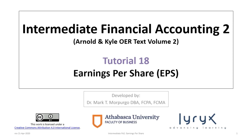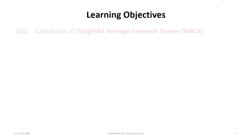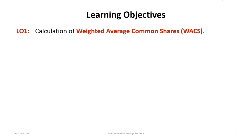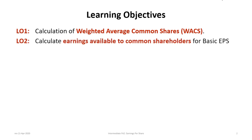Welcome to Intermediate Financial Accounting 2, Tutorial 18. This tutorial focuses on calculating earnings per share (EPS). It has seven learning objectives: first, to demonstrate how to calculate the weighted average common shares (WACS); second, to calculate the earnings available to common shareholders for the purposes of calculating basic EPS; and third, to illustrate how to calculate basic EPS.